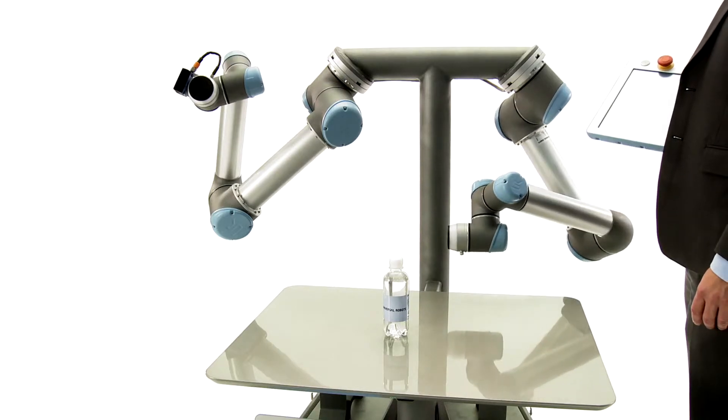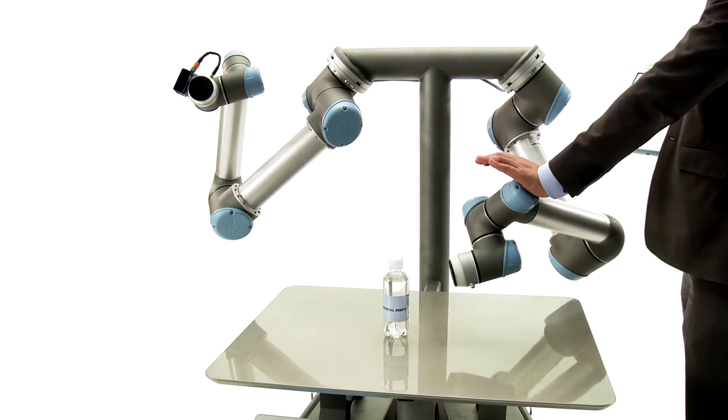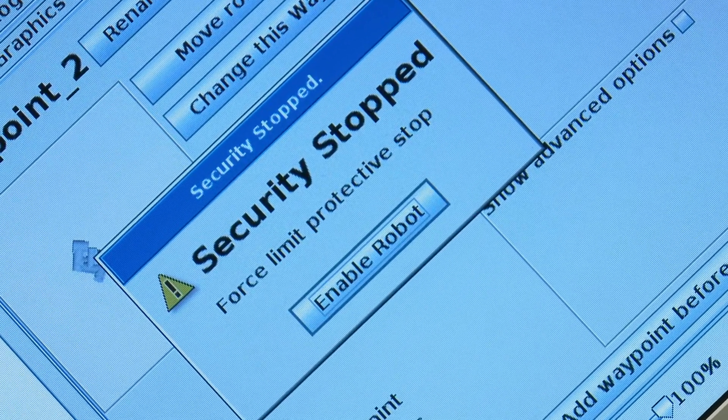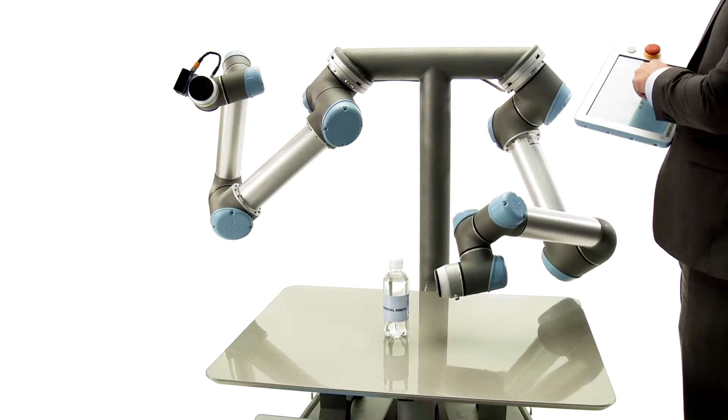Employees can work right alongside the robot. If a person comes into contact with the robot arm, it automatically stops operating, ensuring worker safety.